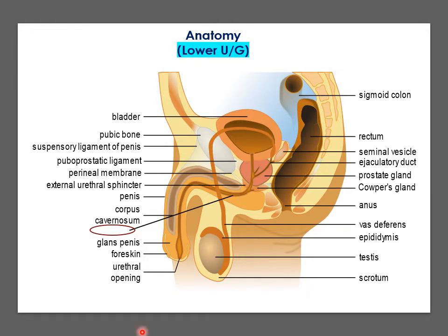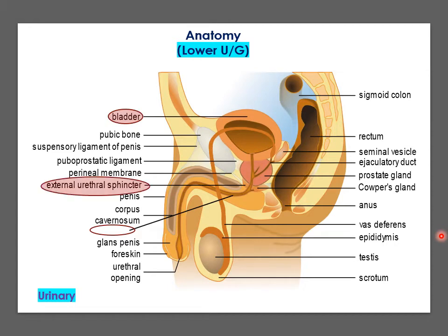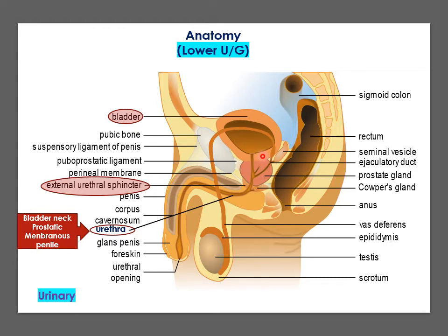Before proceeding, let's look at a refresher on the anatomy of the lower urogenital tract. It consists of various structures associated with the urinary system, including the bladder, external urethral sphincter, and urethra. The urethra is divided into four main parts: the part passing through the neck of the bladder, the prostatic urethra which passes through the prostate and receives the ejaculatory ducts from the vas deferens and seminal vesicles, the membranous urethra passing through the sphincter, and the penile urethra.